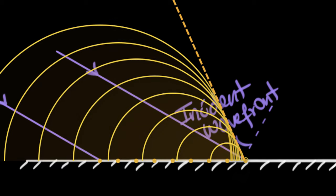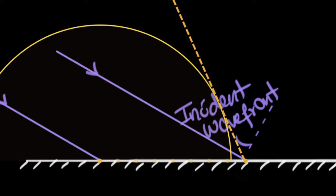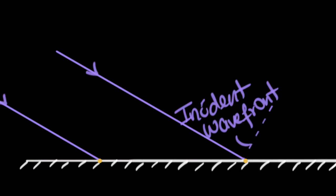But how do you draw this on a piece of paper? What's interesting is that we don't need all the circles to draw a tangent. Since we're drawing a tangent from this endpoint, one circle is enough. So we'll ignore all the other Huygens sources, consider just this one source, draw one circle, and then draw a tangent from here to there — and that's going to represent our reflected wavefront.